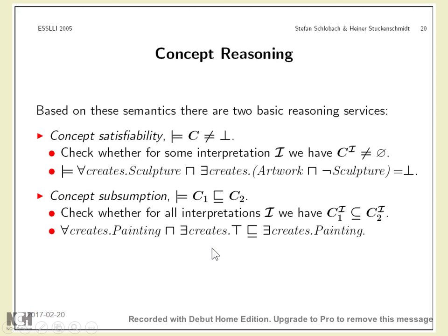How can we use this? We can construct a class by describing some properties and check whether that class is a legal subset of another class — for example, the class of workers, whether it is a subclass of people with a contract. Or would it be possible to be a worker without a contract? If worker is not a subclass of having a contract, it means some rules allow working without a contract — and this may be something to be fixed.